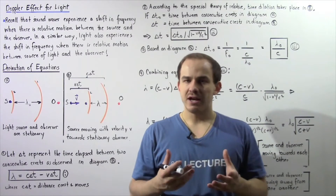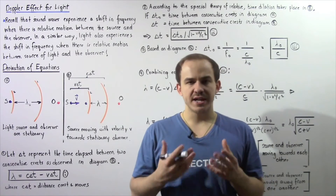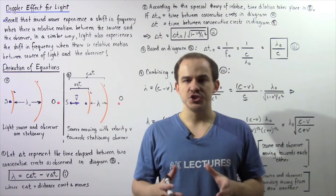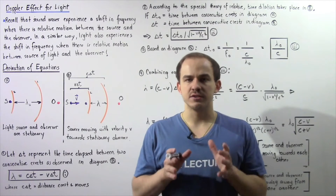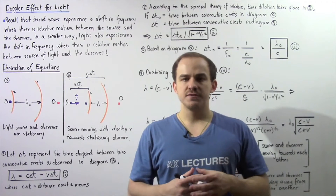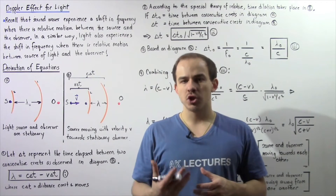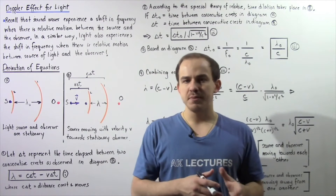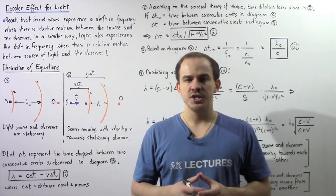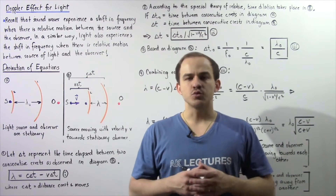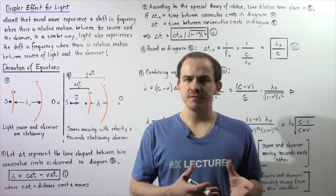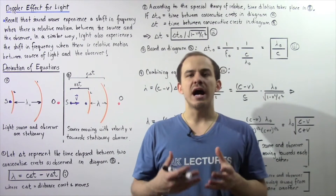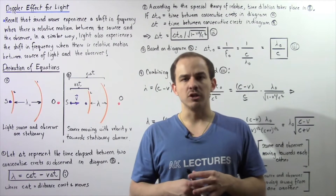In our discussion on sound waves, we said that sound waves experience a shift in frequency when there's relative motion between the source of sound and the observer. In a similar way, light also experiences a shift in frequency when there's relative motion between the source of light and the observer, and this is known as the Doppler effect for light.